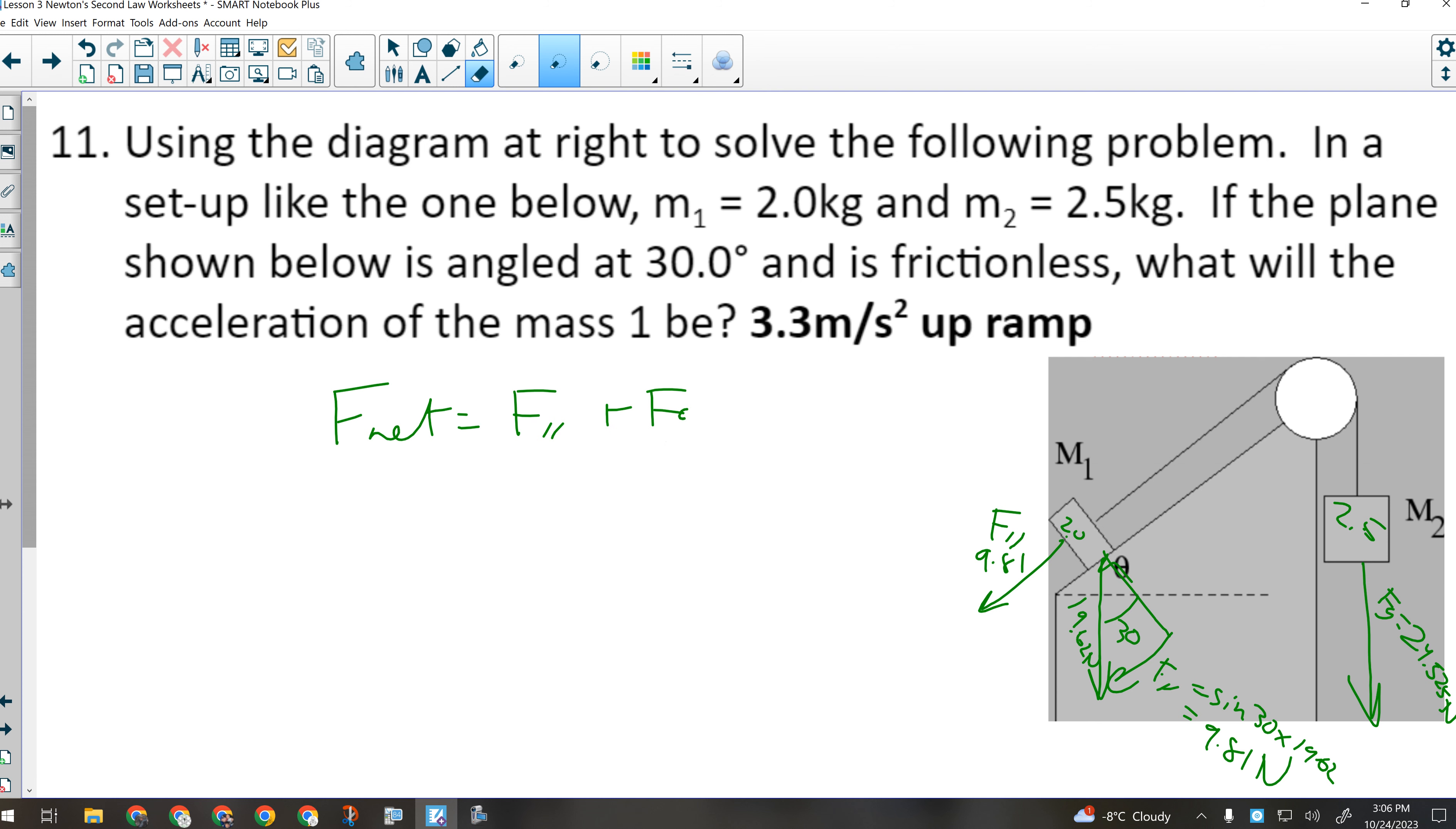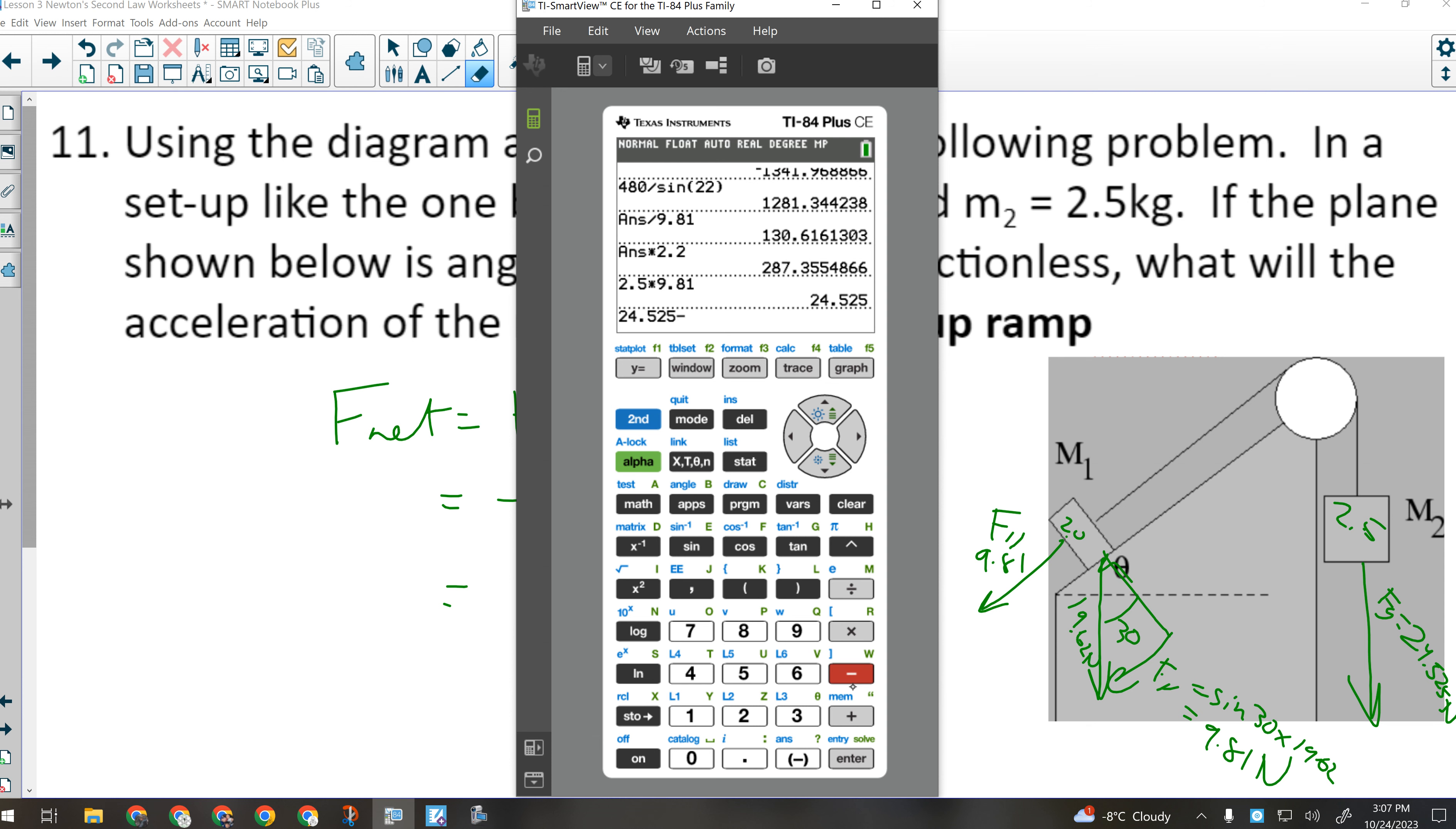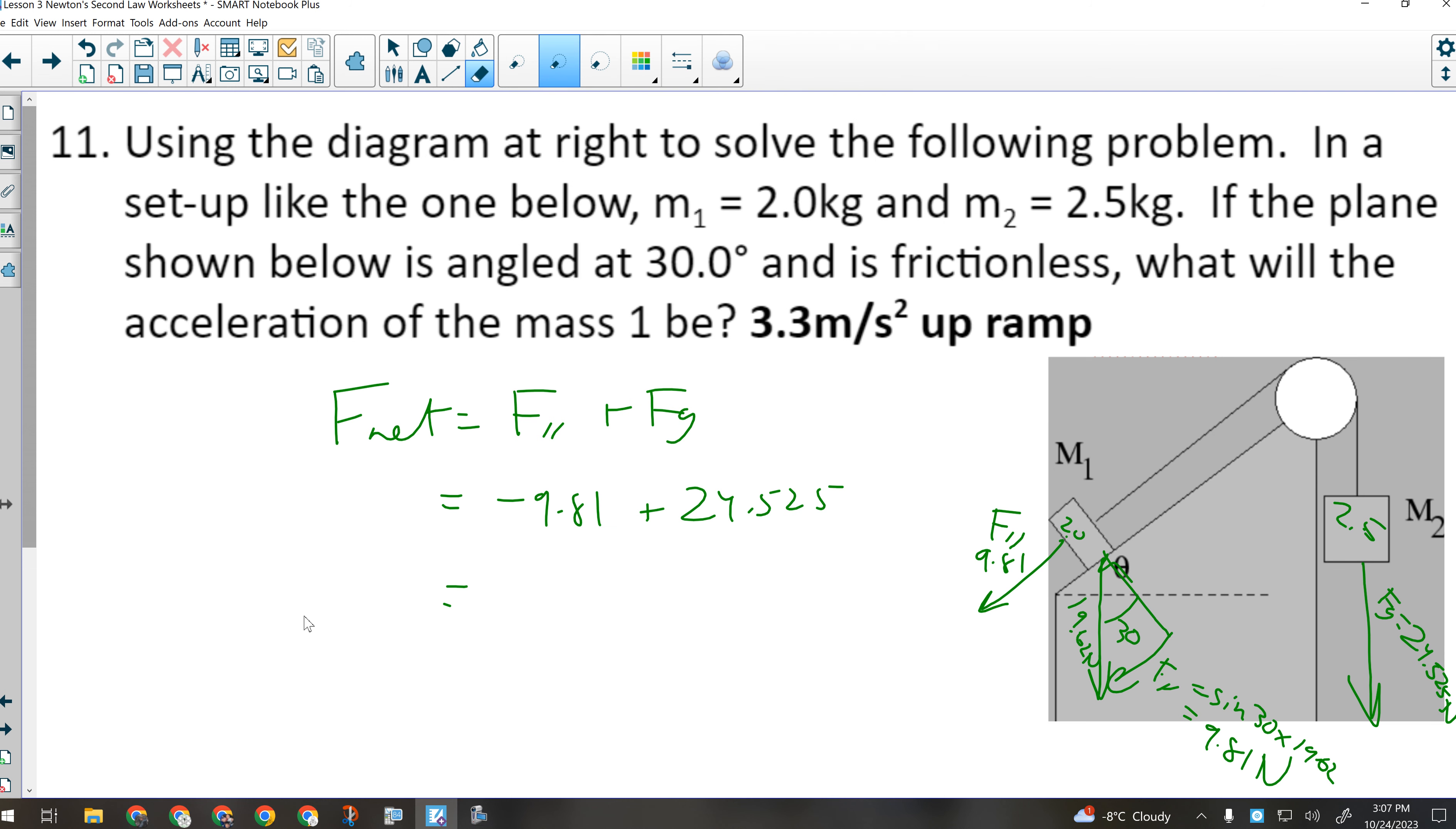So I can calculate the net force in this system. It's going to be F parallel plus the force of gravity, but one's positive, one's negative. So F parallel, I'm going to make negative because it's down the ramp. Plus the 24.525 going the other way. So when I do that, I've got 14.715 newtons as my net force in the system. If I want to get the acceleration of mass one, I'm going to take that net force and divide by the mass of the system, 4.5 kilograms. If I do that, 14.715 divided by 4.5 kilograms, I should get 3.3 meters per second squared. And because it asked about mass one, that is up the ramp.